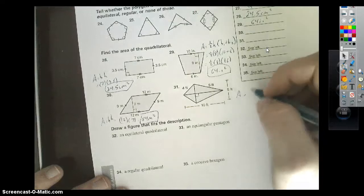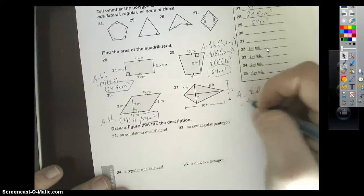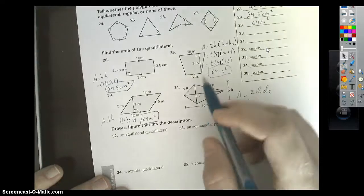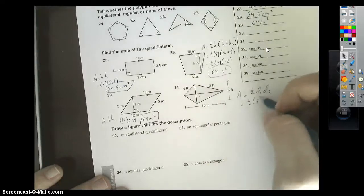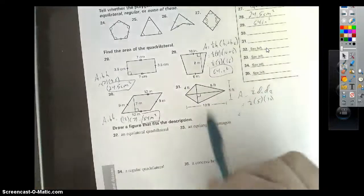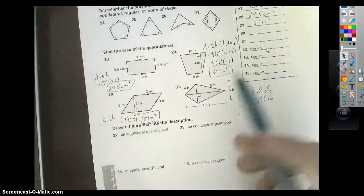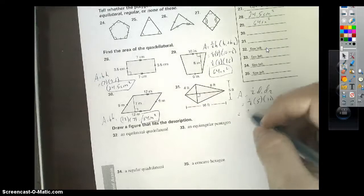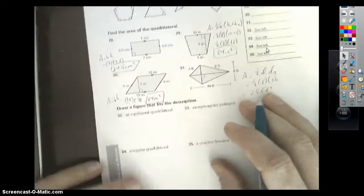And lastly, a kite, one-half D1 times D2. Your D1 is this length going across, the whole length, which is 5. Going this way is 10. Note that the 4 and the 8, not necessary. We don't need it for this problem. Half of 10 is 5. 5 and 5 is 25 feet squared.